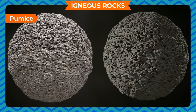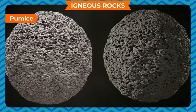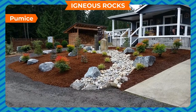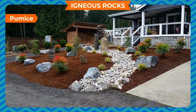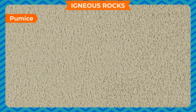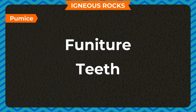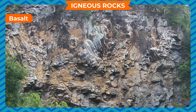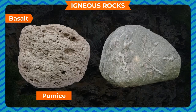Pumice is formed by the quick cooling of lava. It is a porous form of rock — while cooling, gases are trapped inside and make it porous. It is a light-colored rock and is mostly used in making concrete blocks and decorative landscapes. We also use it for polishing floors, furniture, and teeth. Domestically it is used as a scrubber.